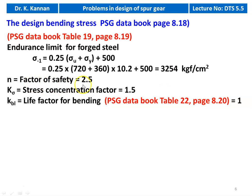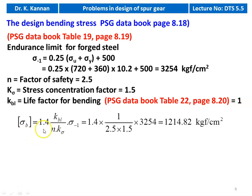Factor of safety is 2.5 from page 8.18. Stress concentration factor Kσ equals 1.5, and life factor KBL from page 8.20 equals 1 for life more than 10⁷ cycles. Design bending stress = 1.4 × KBL / (n × Kσ × σ₋₁) = 1.4 × 1 / (2.5 × 1.5 × 3,254) = 1,214.82 kgf/cm².